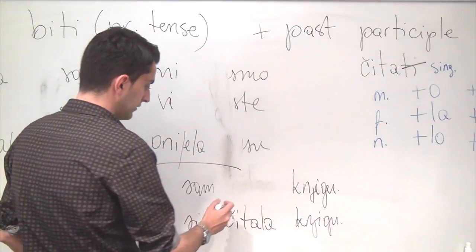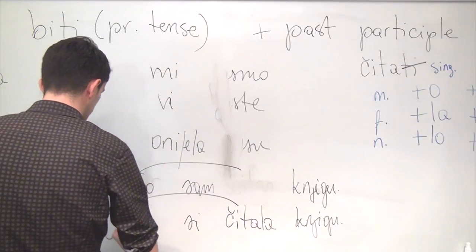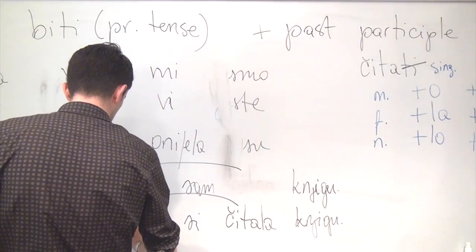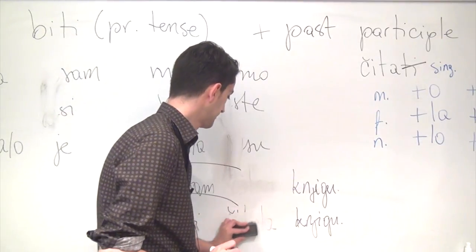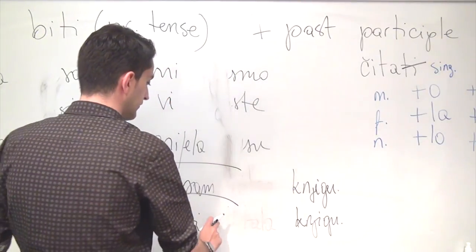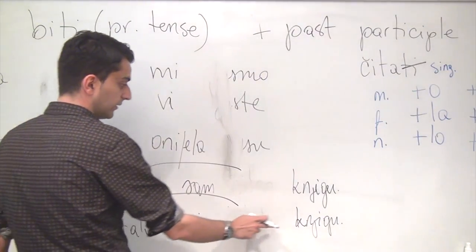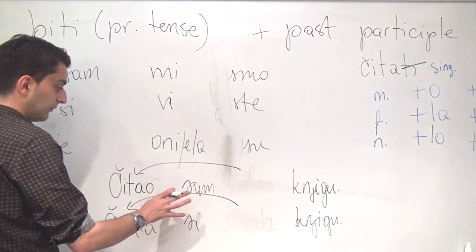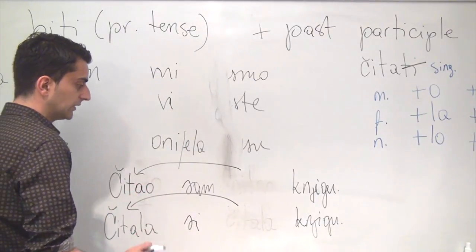Same thing in our example here. We will move the past participle to the beginning of the sentence. Čitala si. We'll get rid of it here. Čitala si knjigu. It's still, you were reading a book. It's just expressed without the subject actually being in the sentence.